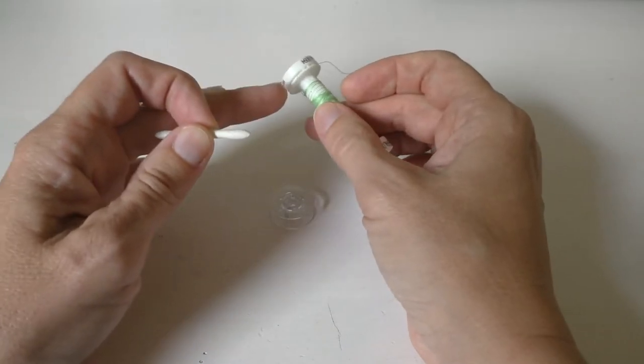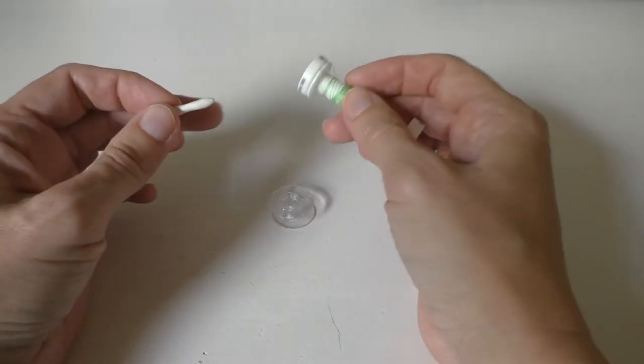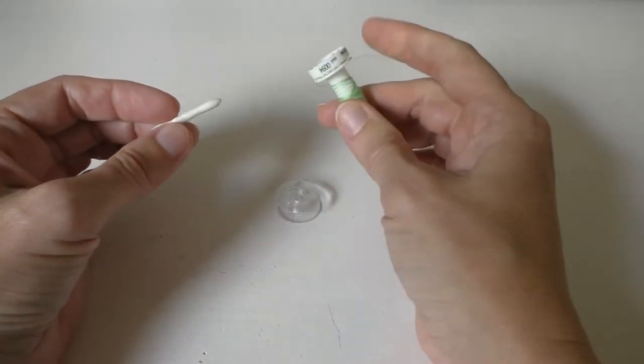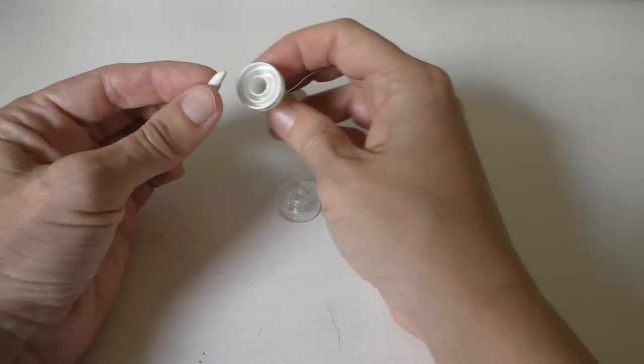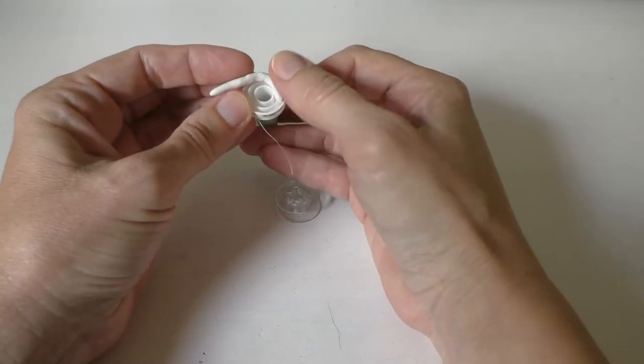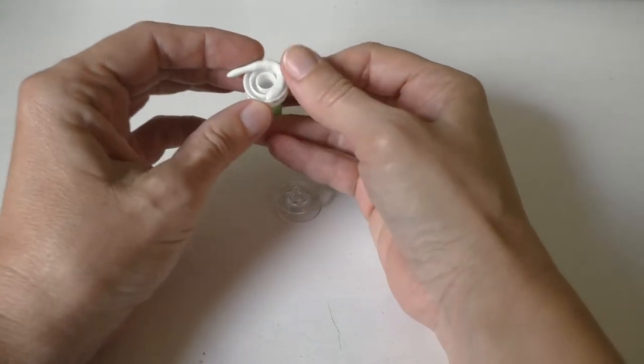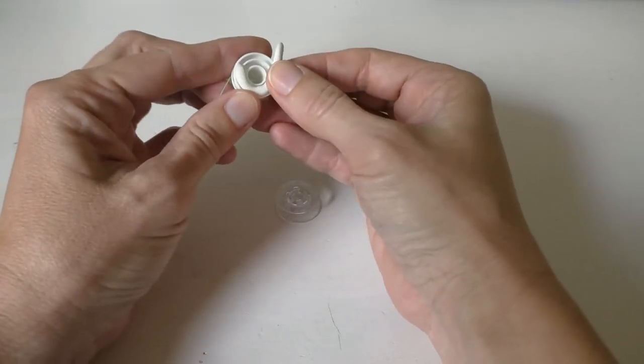Now I'm going to purposely put it on the end that has this thread catcher thing, because I want to have the thread catcher at the bottom next to my bobbin when I put all of this together. And when I put it on, I'm going to make sure that I'm putting it on one of these ridges that you see. So I've taken the paper off.